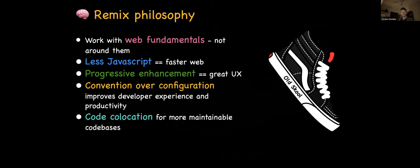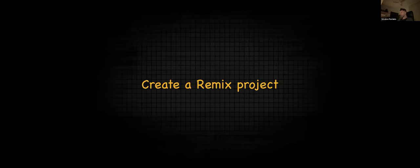Remix philosophy: it's old school as well. There's a trend — as with Astro, as with Redwood — of doing new stuff with an old-school mindset. It works with web fundamentals, does not try to work around them. It's another framework that says less JavaScript means a faster web, and it achieves this through progressive enhancement, which provides a pretty great user experience. Convention over configuration, Ruby on Rails inspired, and it also promotes code collocation — the stuff that changes together should be located in the same files or nearby.